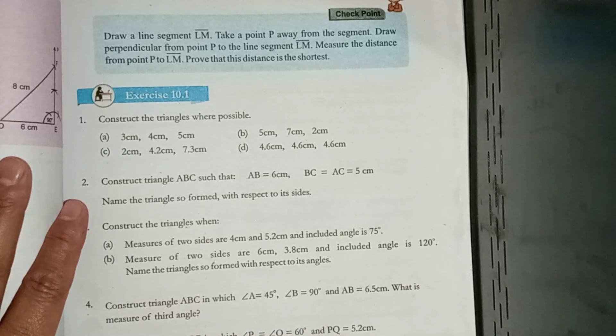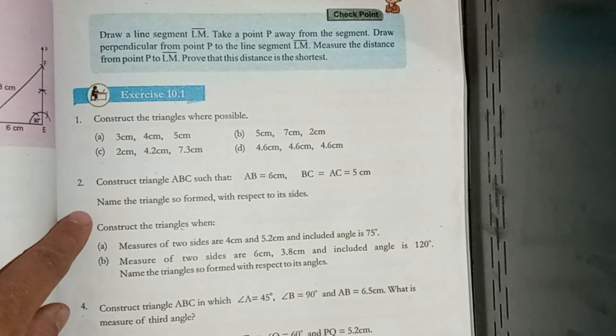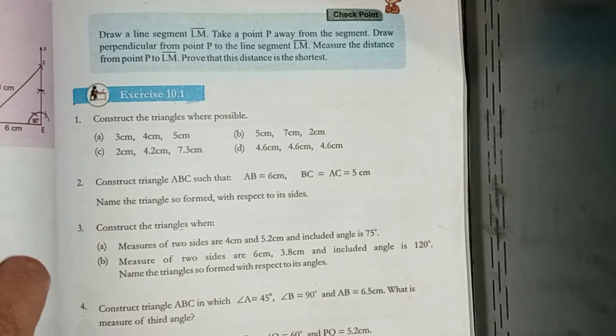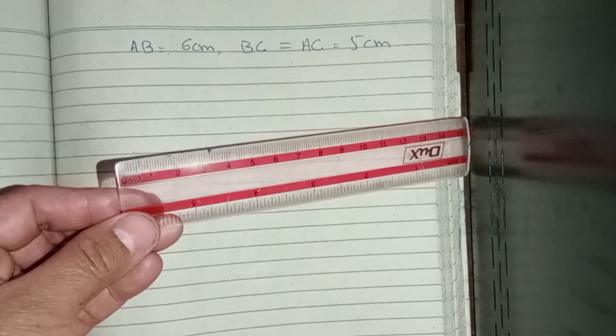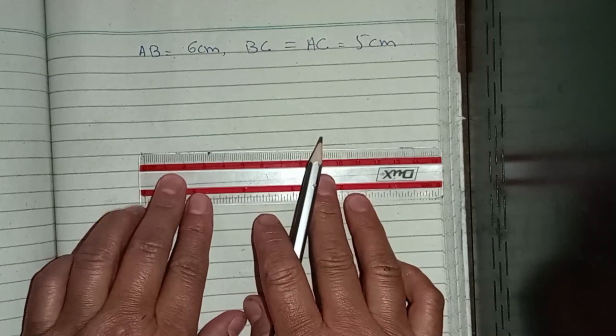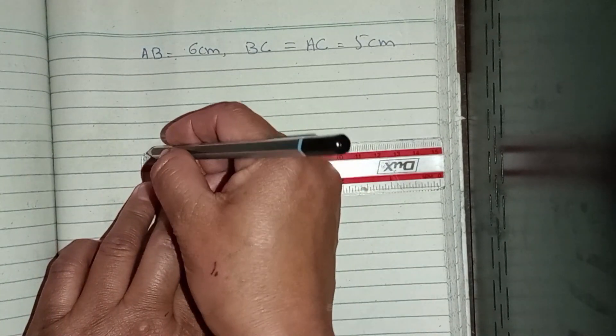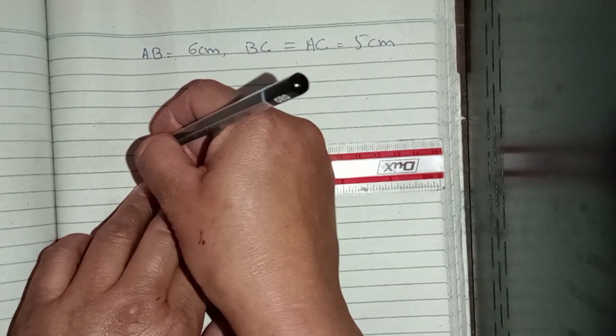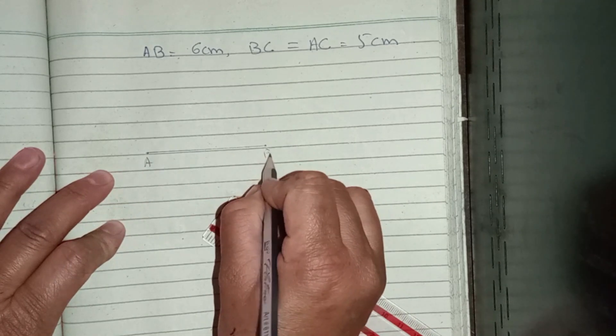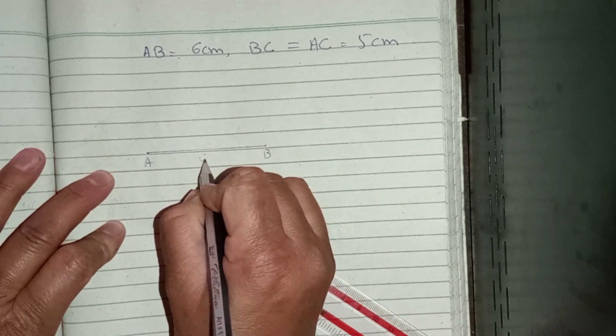When the triangle is made, we will name it. Let's draw a line of 6 cm. This is AB, so this line is 6 cm.